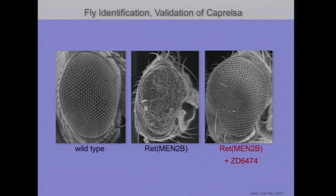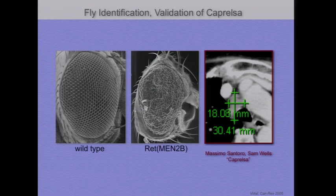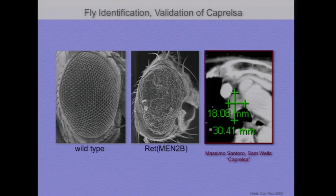One drug that we hit was particularly notable — a compound originally called ZD6474, which was developed by AstraZeneca. In the presence of this compound and the oncogene, the eye is almost completely normal. What was striking in the fly is that it could cure the fly tumors at a concentration about 30-fold lower than was required to harm the fly — a therapeutic index of 30. There was important work done by Massimo Santoro showing that ZD6474 also worked well in human cell lines. This was picked up by Sam Wells, our close clinical collaborator, and brought to clinical trials where, last April of 2011, it was approved as the first chemotherapy for medullary thyroid carcinoma. Its commercial name is Caprelsa.